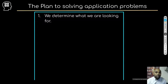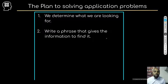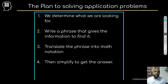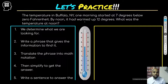Here's the plan to employ when solving application problems. One, determine what we're looking for — always a good start, make sure you know what they're asking for. Number two, write a phrase that gives the information to find it, summarizing what they're looking for. Next, translate that phrase into math notation so we can begin working the problem. Then simplify to get the answer. And don't forget the last step: reword it to confirm we answered the question.